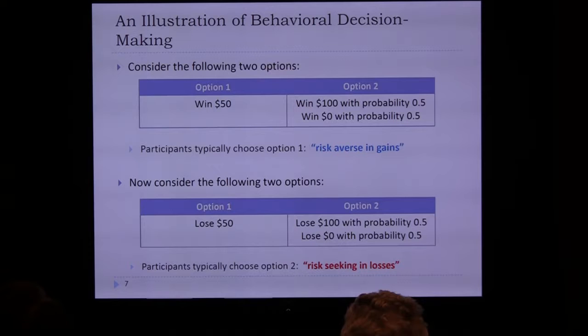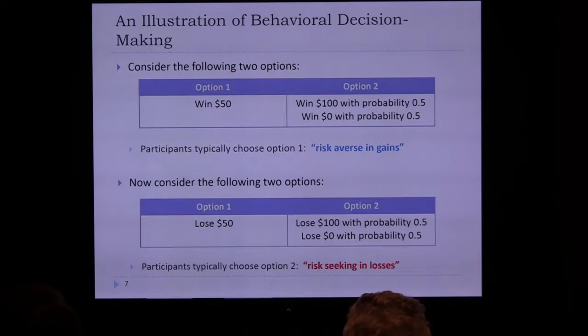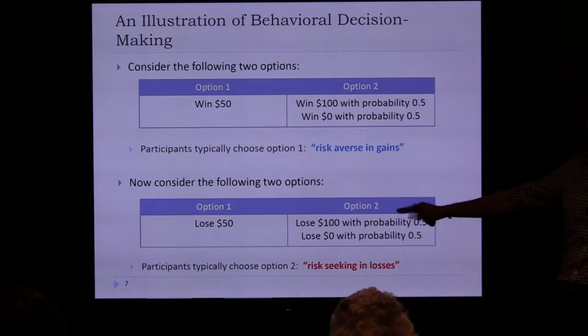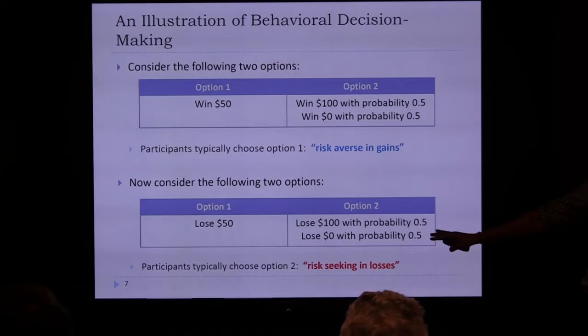But if you flip the signs: option one is definitely losing $50, while option two gives a 50% chance of losing nothing and 50% chance of losing $100. Interestingly, experiments found participants switched to option two — willing to gamble for the chance to lose nothing. The mean value is still $50, but when faced with a loss, people no longer go for the sure bet. This is characterized as humans being risk seeking in losses.